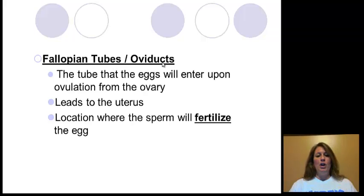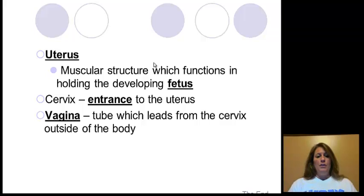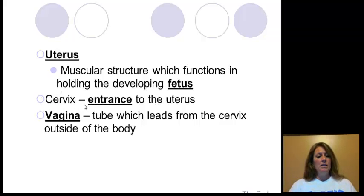The fallopian tubes, also called oviducts, connect the ovary to the uterus. Fertilization can only occur inside the fallopian tube — the egg must leave the ovary, enter the tube, and then sperm swims up through the uterus into the fallopian tube where the two meet. The uterus is where the fetus develops. The cervix dilates during labor — 10 centimeters is required before pushing — and effaces, meaning it thins out. Contractions help with dilation. The vagina leads out of the body.